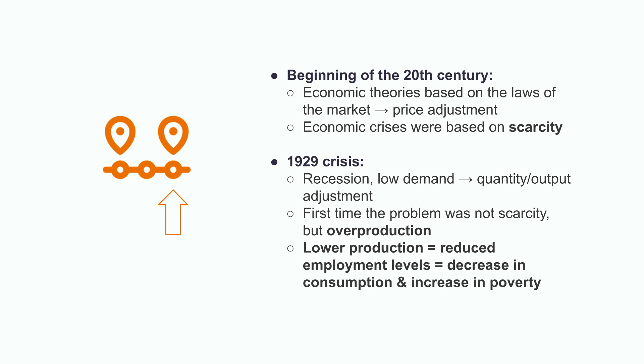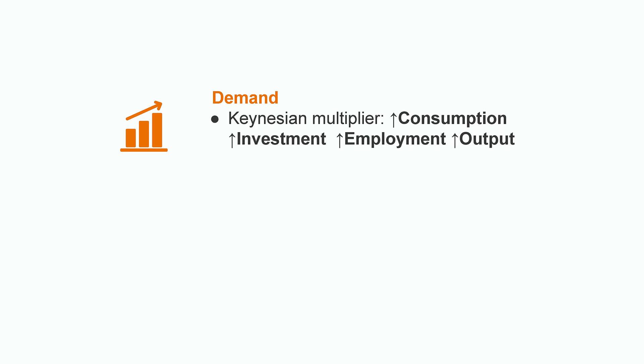This lower production eventually implied a reduction in employment levels. Fewer employed people generate a further fall in consumption and a consequent increase in poverty, which discourages production, and so on. Up to this point, the theories of classical economics had predicted that governments only had the role of ensuring the correct functioning of market laws, as well as the provision of public goods such as education, water, or health. Faced with this recession and seeing the feedback between falling consumption and investment, there was a paradigm shift: Keynesian theory.